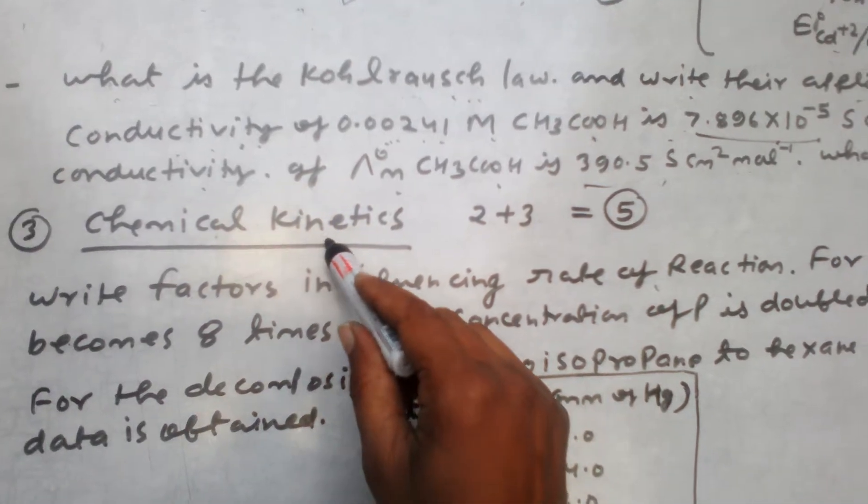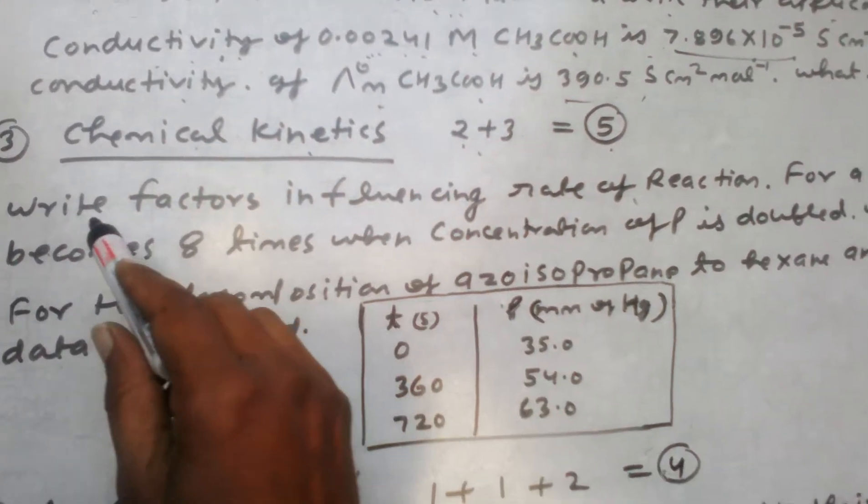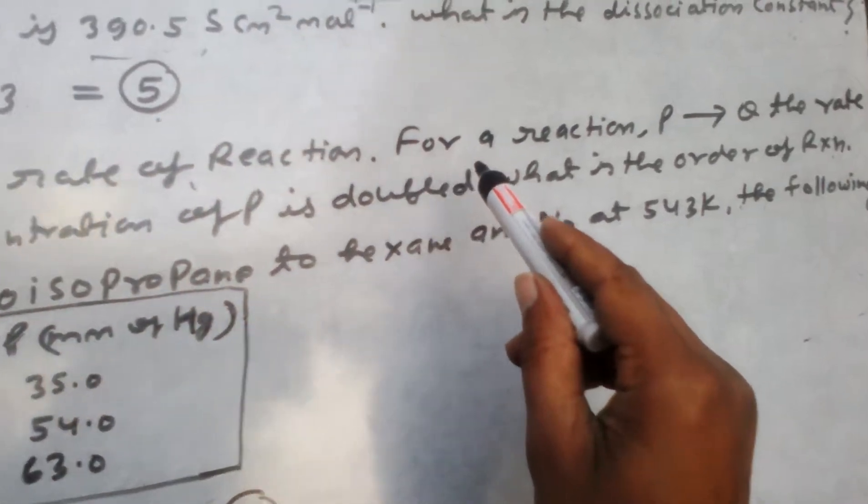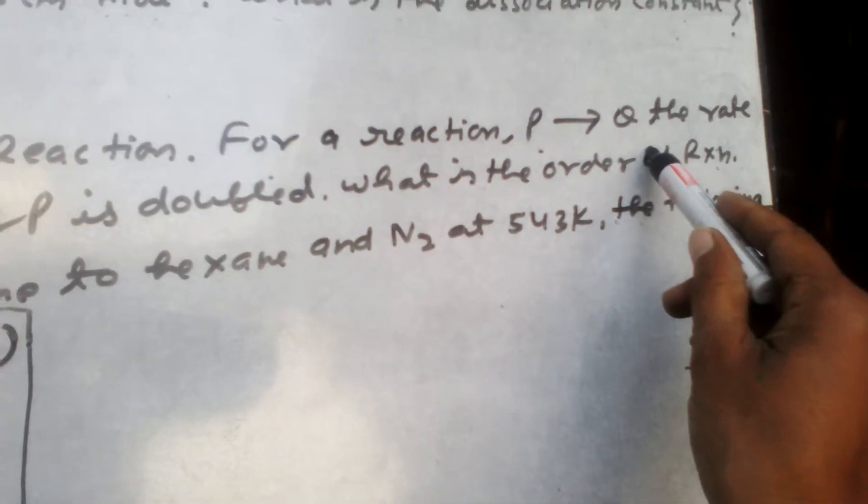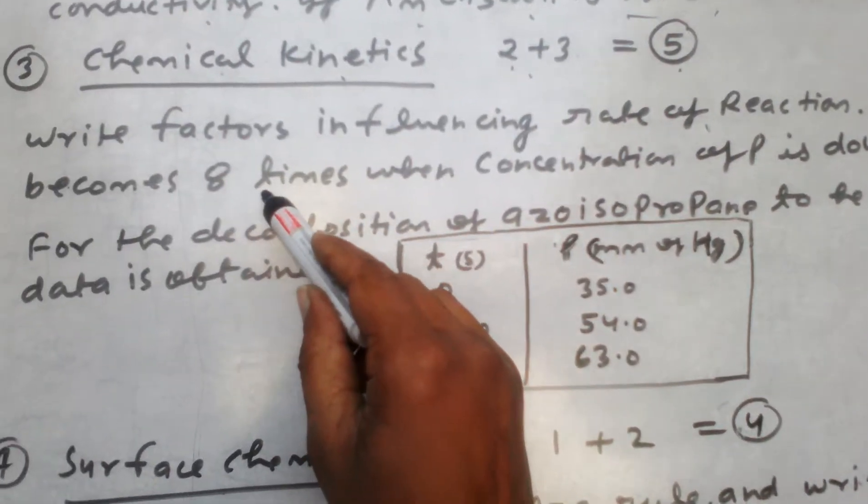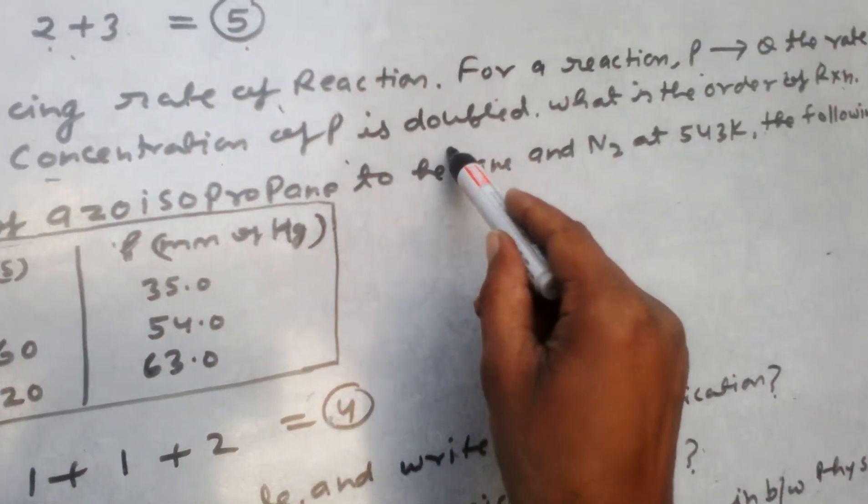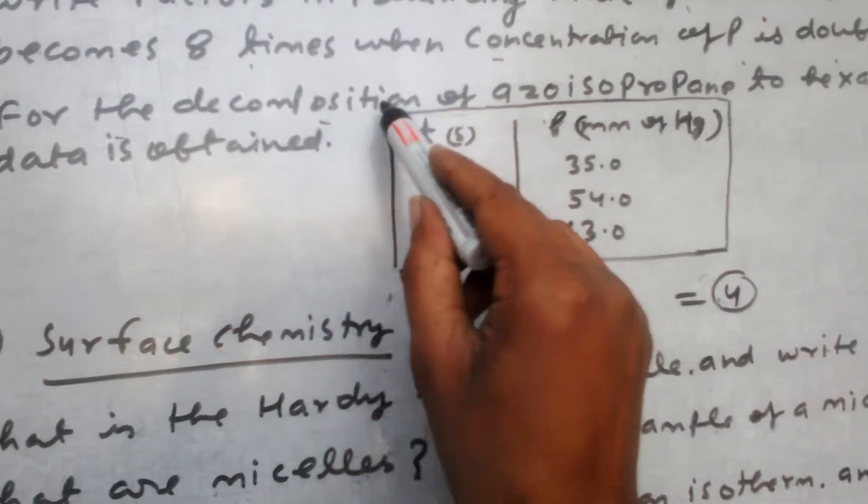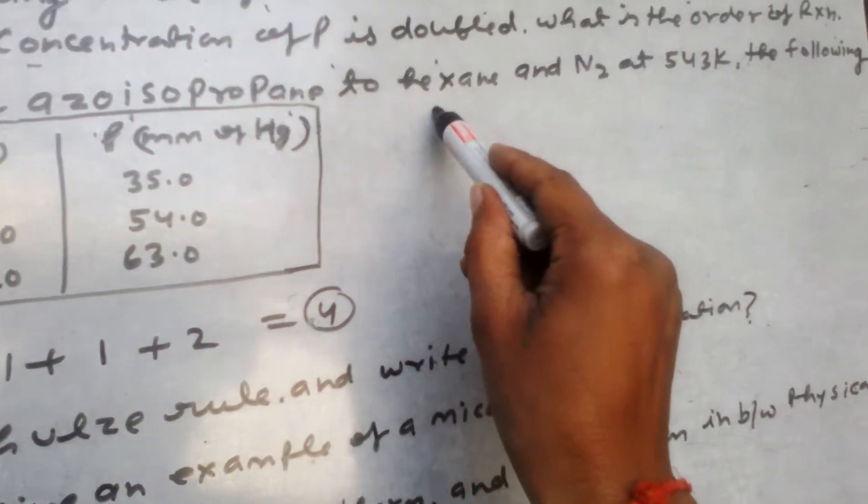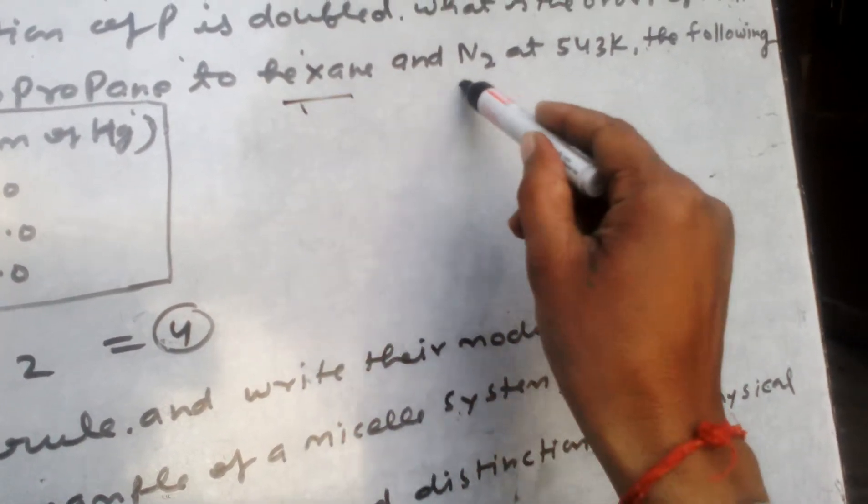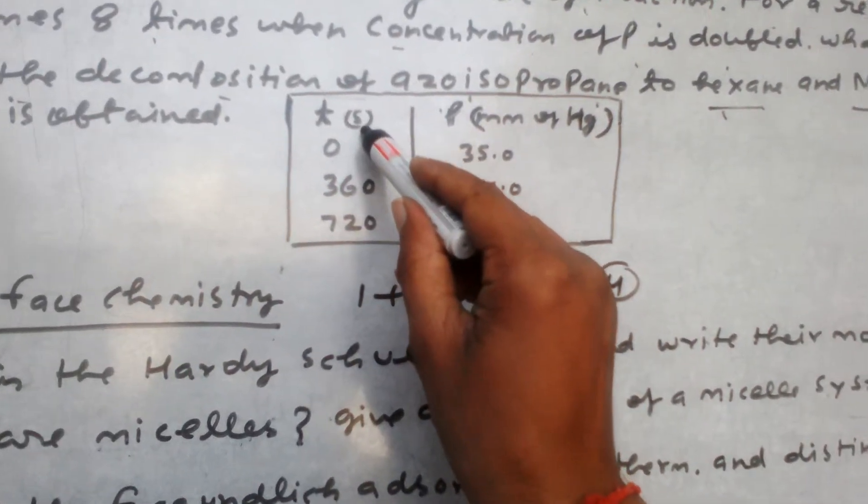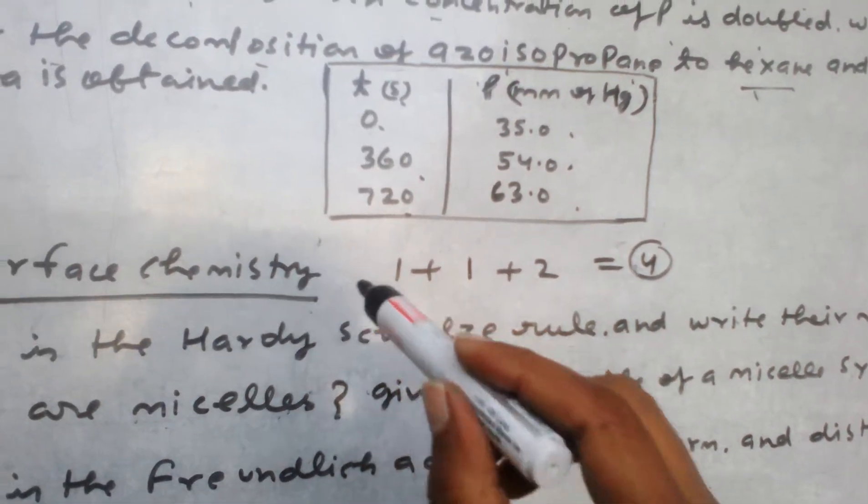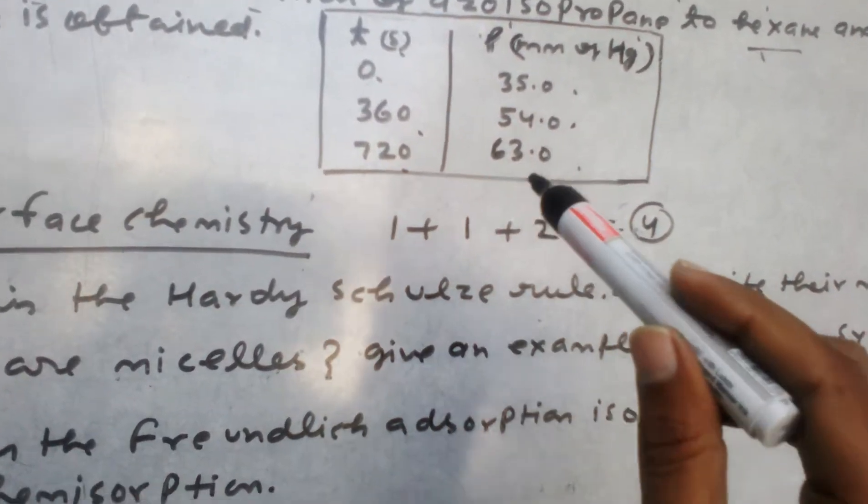Chemical kinetics, this is also 5 marks. First question: write the factors which influence rate of reaction. Numerical: for reaction P to Q, the rate of reaction becomes 8 times when we double the concentration of P. What is the order of reaction? Most important question. Second question: decomposition of azoisopropane to hexane and nitrogen gas. Data is given at different time intervals. What is the order of this reaction, first or second order?